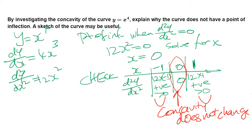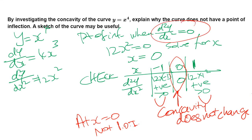So x = 0 is not a point of inflection. Because this is the only point where the second derivative equals 0, this curve does not have a point of inflection. When you have a question requiring an explanation, first do the math then write your explanation: when d²y/dx² = 0, x = 0, but when you do the check, concavity did not change. Therefore at x = 0 that point is not a point of inflection, and there are no other points of inflection.